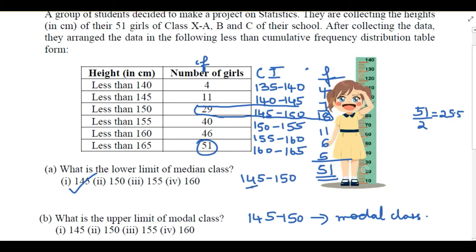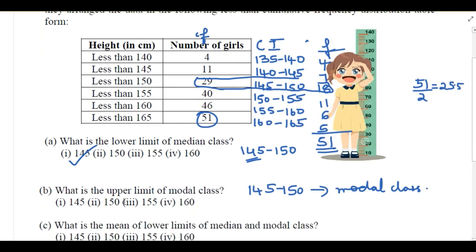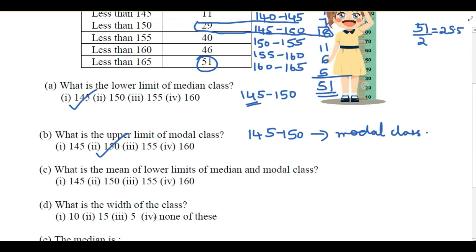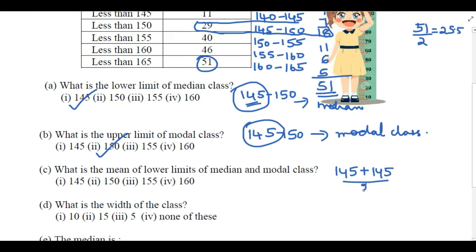The modal class is 145–150, so its upper limit is 150. The next question asks for the mean of the lower limits of the median class and the modal class. Both classes are 145–150, so the mean is (145 + 145) / 2 = 145.